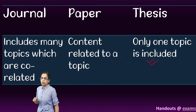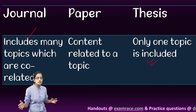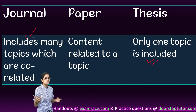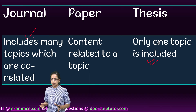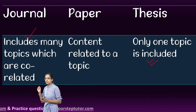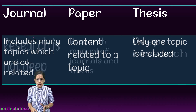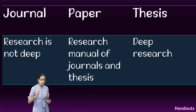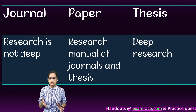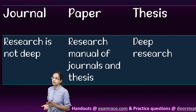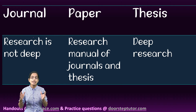Under a thesis we have just one topic, whereas in a journal we can have co-related topics. So if it's a journal on environment, there could be issues related to environment, ecology, and nearby issues which pertain to it. A paper is related to a topic which could be part of the journal. When it comes to publication, papers are published as part of a journal or thesis — so it's a kind of research manual; however, in general the research is usually not that in-depth.